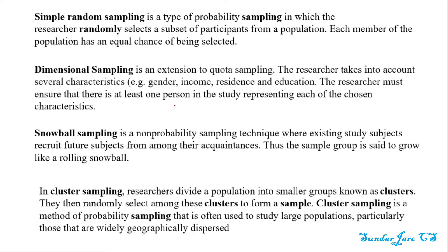Cluster sampling: researchers divide a population into smaller groups known as clusters, then randomly select among the clusters to form a sample. Cluster sampling is a method of probability sampling that is often used to study a large population, particularly those that are widely geographically dispersed.